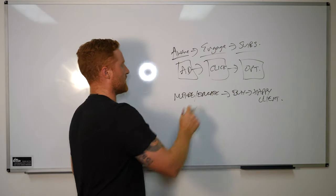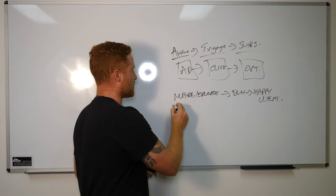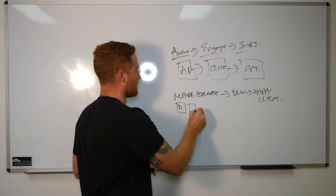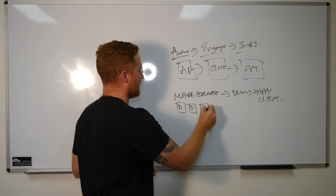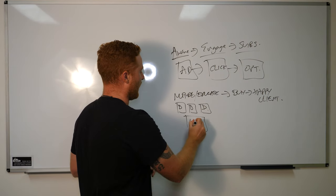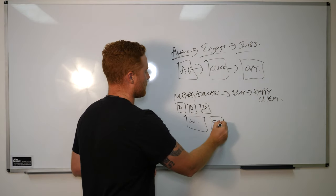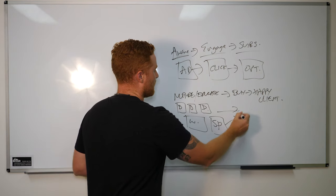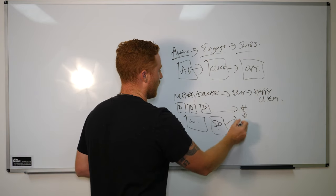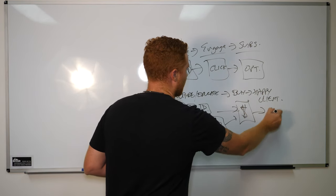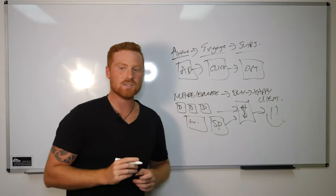And so the old way was once they opted in, we would nurture and engage. So we would send a bunch of videos, value videos. We would get them to some sort of webinar or sales page, and eventually they would buy or go away. They would work with us and then become happy. Now, this is the old model.